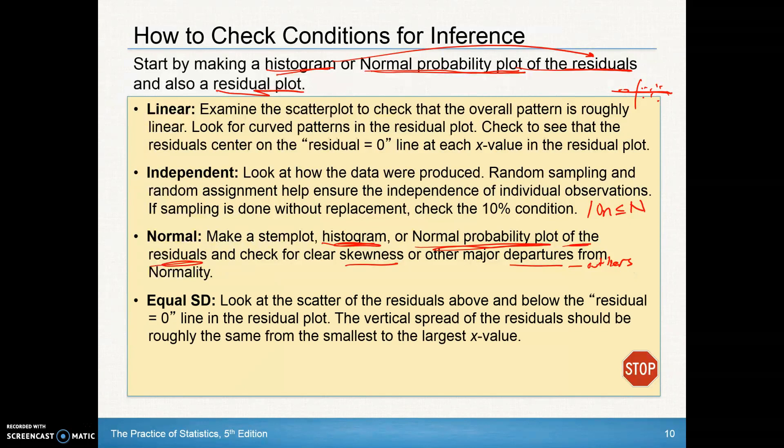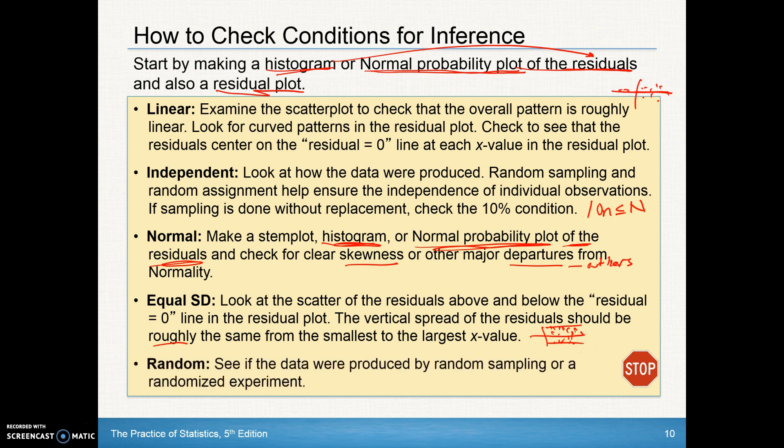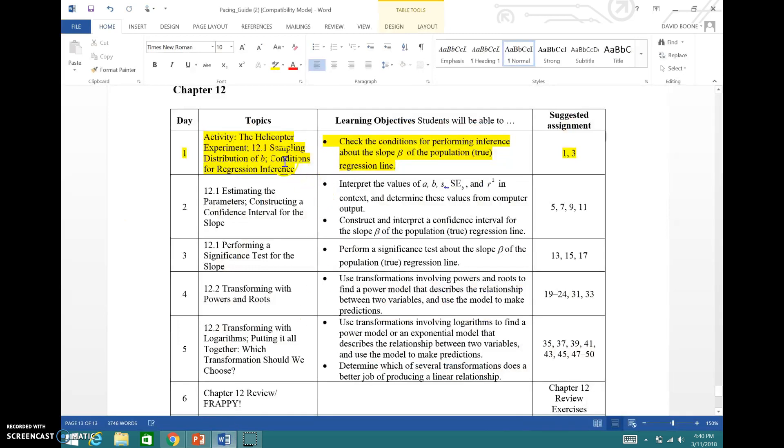Equal standard deviation, you can look at the scatter of the residuals above and below the residual line. The vertical spread of the residuals should be roughly the same from the smallest to the largest x-value. So again as you're looking at a residual plot that they're all about the same distance away. Lastly, make sure the data are produced by random sampling or a randomized experiment. At this point you should now be able to do these problems here from day one problems numbers one and three. All right, good luck and we'll see you in the day two video.